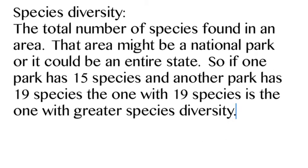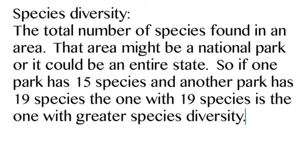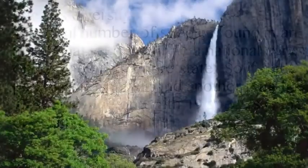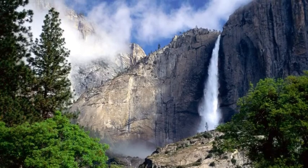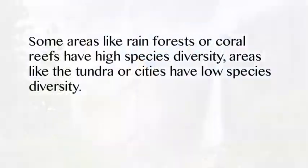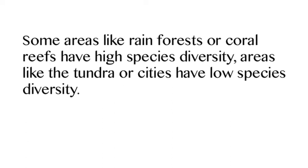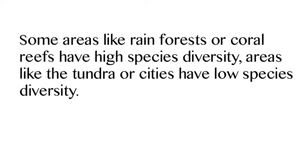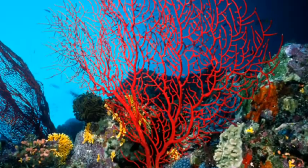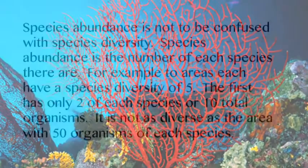Now let's look at species diversity, sometimes called species richness — that's the total number of species found in an area. That area can be a national park like Yosemite or the state of Missouri. Some areas like rainforests or coral reefs have super high species diversity, while tundras or cities have relatively low species richness.